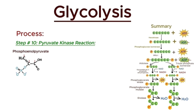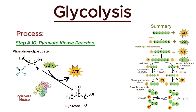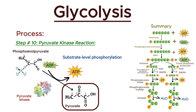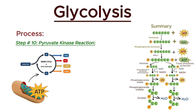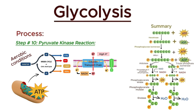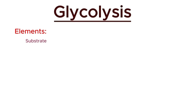In the tenth step of glycolysis, phosphoenolpyruvate is converted into pyruvate. The enzyme pyruvate kinase catalyzes this reaction. During this step, the high-energy phosphate group from PEP is transferred to ADP, forming ATP — another example of substrate-level phosphorylation. The result is the production of pyruvate, the end product of glycolysis. This step is crucial as it not only produces ATP, but also forms pyruvate, which can enter the mitochondria for further energy production through the citric acid cycle and oxidative phosphorylation under aerobic conditions, or be converted into lactate under anaerobic conditions. Finally, we obtain pyruvate while generating ATP, catalyzed by pyruvate kinase.